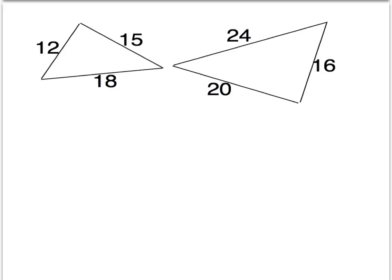In this video we'll look at some pairs of triangles and see whether we can prove they're similar or not. In this first example we know all three sides of both triangles. Because we know all three sides and nothing about angles, we want to check to see whether the triangles are similar using the SSS similarity statement.